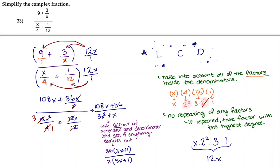So it looks like now I can cancel out the terms of 3x plus 1 in the numerator and 3x plus 1 in the denominator, leaving me with my final answer of 36 over x.